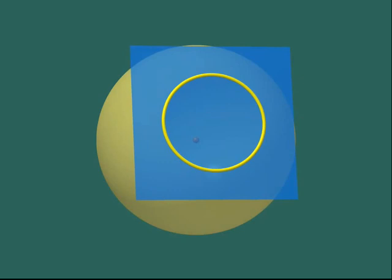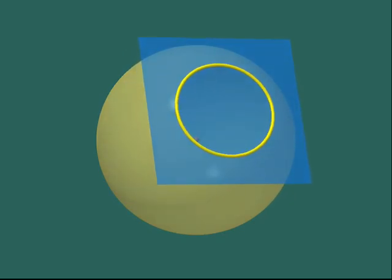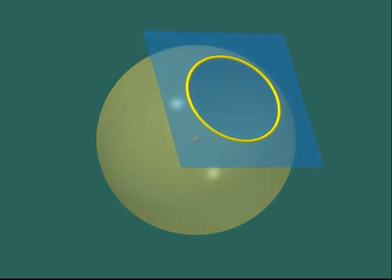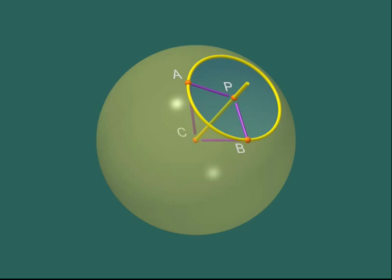Well, let's consider an arbitrary plane, coloured in blue. We can draw the perpendicular from the centre C of the sphere to the plane. Let's call P the foot of this perpendicular. Consider two points A and B on the intersection of the sphere and the plane. And let's look at the two triangles, C-P-A and C-P-B.